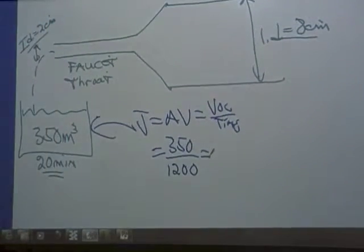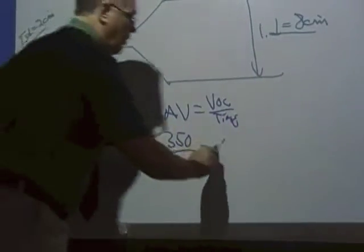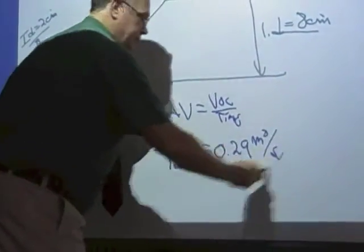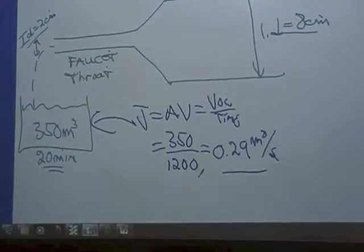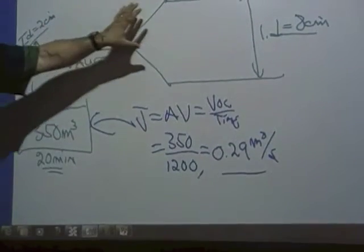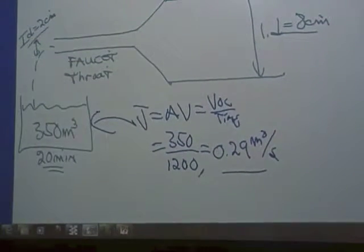That gives us a flow of 0.29. What are the units? Meters cubed per second. Agreed? So now we got the flow. Now we can find the velocity in the throat and the velocity in the main. By doing what?